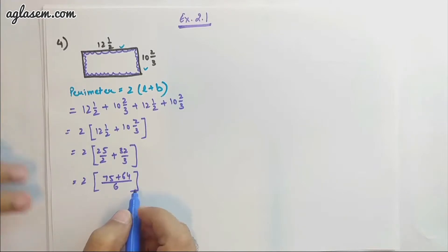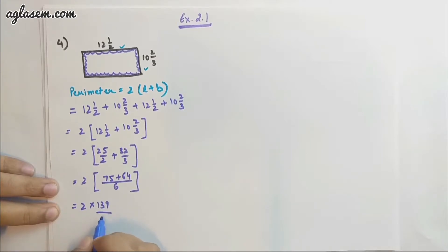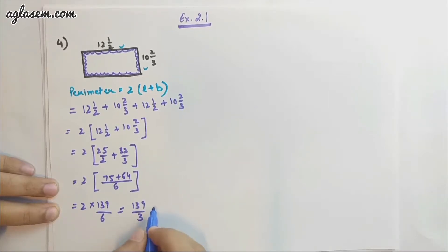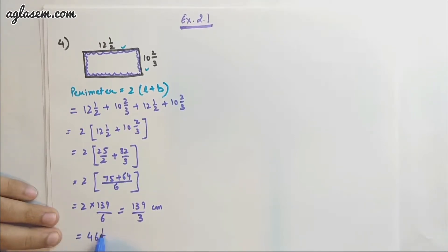That is equal to 139/3 centimeter. If you wish to convert into a mixed fraction, that is 46 1/3 centimeter. This is the perimeter of this rectangle.